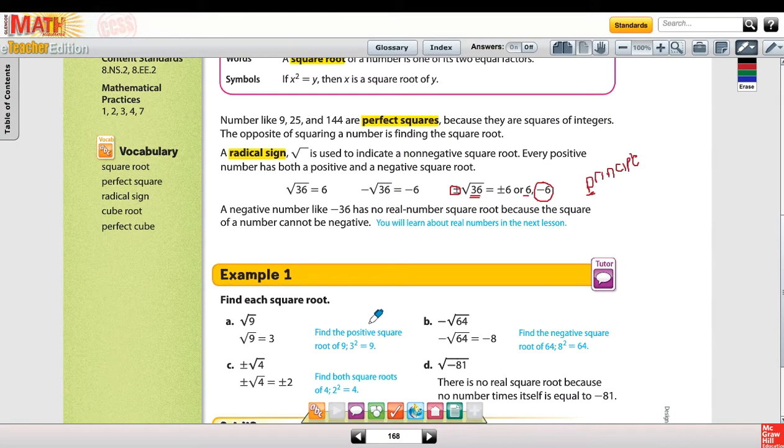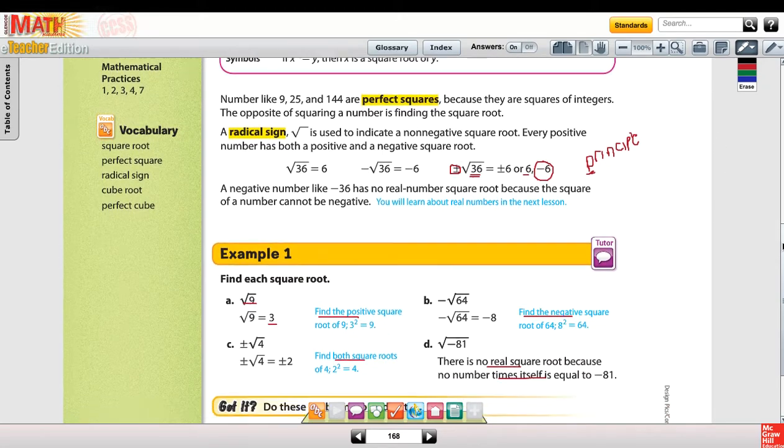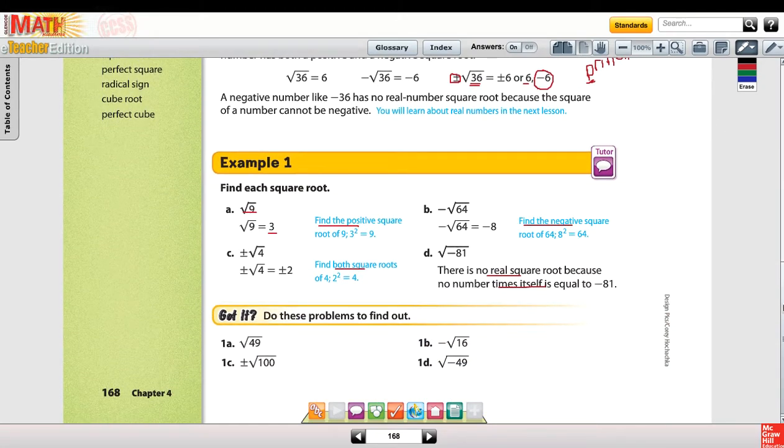Going down to example 1, the square root of 9 is 3. It says find the positive square root, so the positive square root would be 3. Find the negative square root. Negative square root would be a negative 8. And in C, the square root of 4, both square roots would be positive 2 and negative 2. And the square root of negative 81 would be not possible because no number times itself would be equal to a negative 81. Go ahead and pause the video and try to do problems 1a through 1d on your own, and then press play to check your answers.